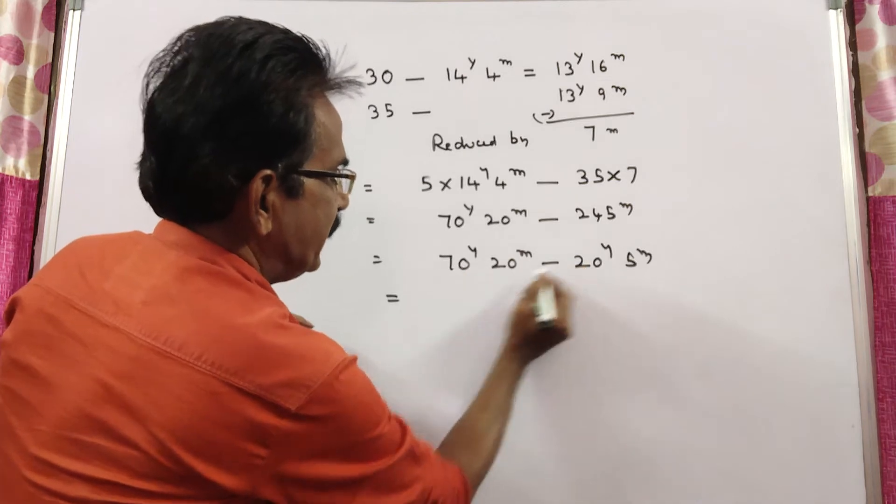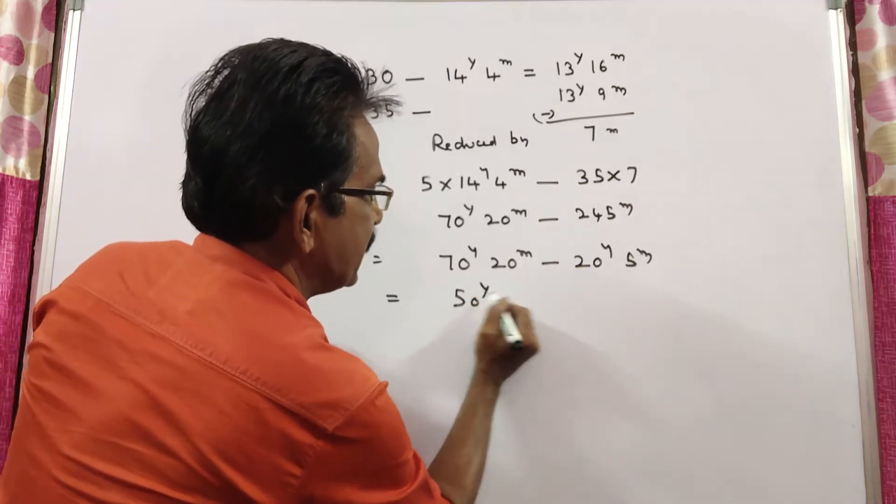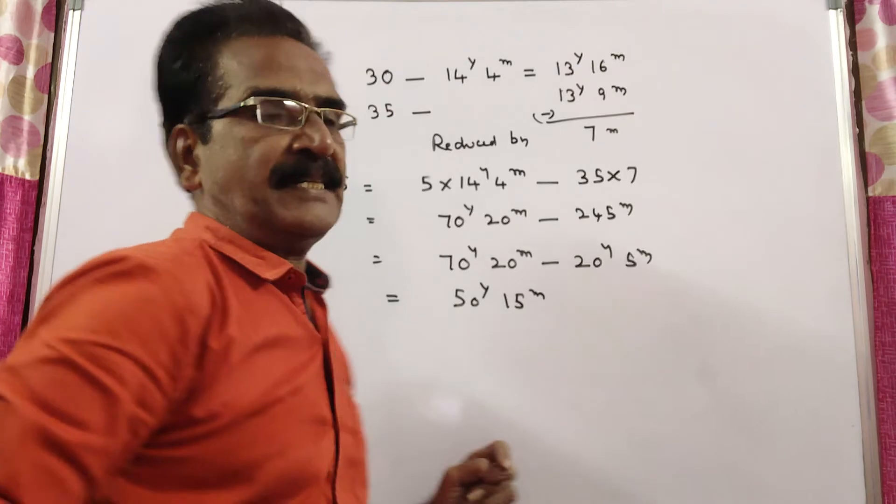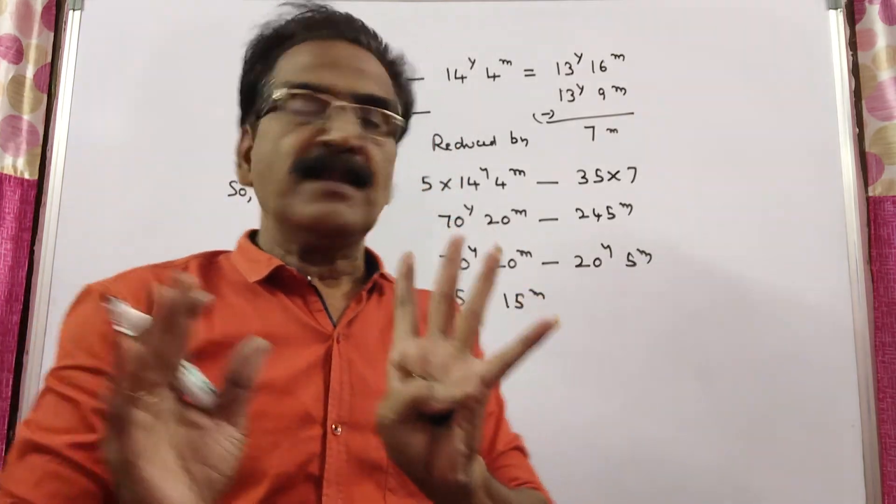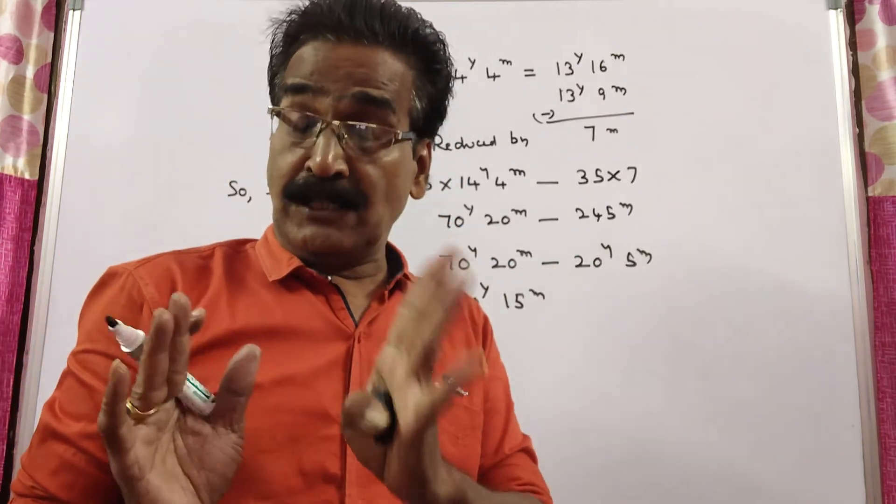So, 70 minus 20, 50 years, 15 months. 50 years, 15 months is the sum of the ages of all the 5 new students.